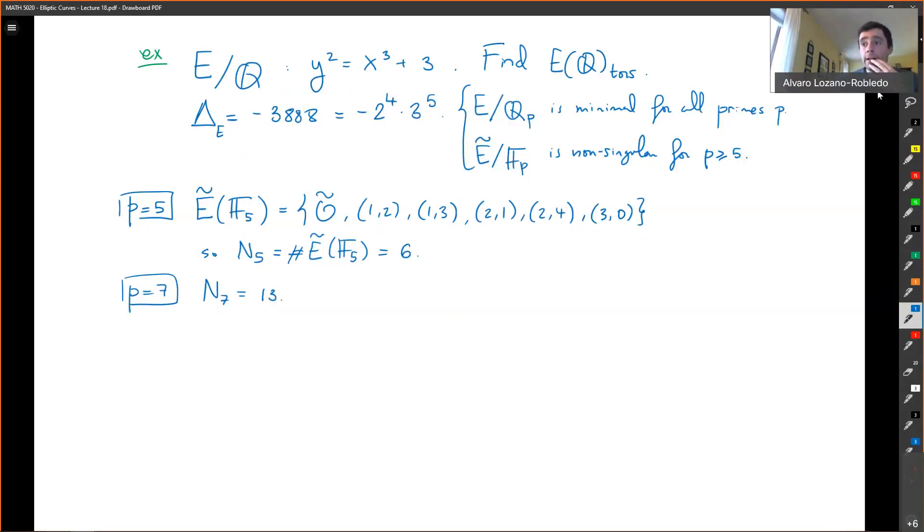Okay, so what does this tell me? Now, the previous proposition, so that is the key, is that the proposition implies that for primes that are, where there is good reduction, okay, for primes where there is good reduction, that map from prime to P torsion down to the residue field, that map is injective.